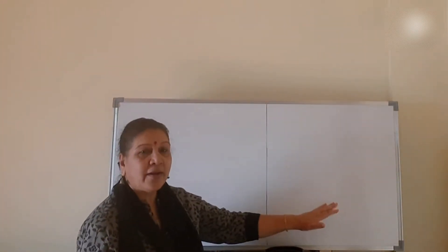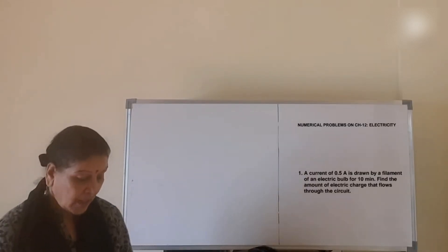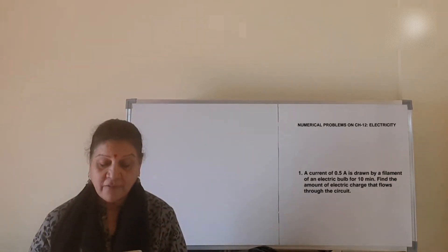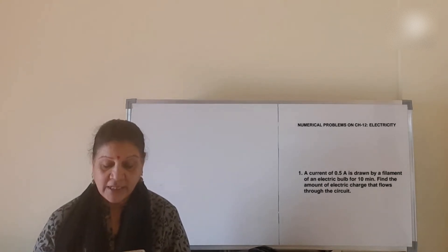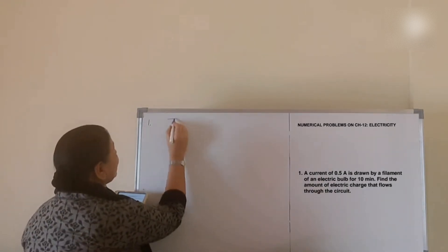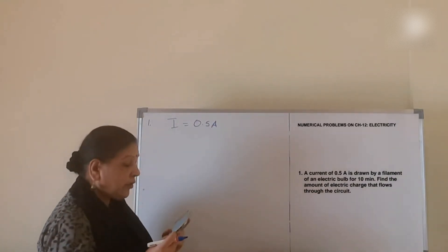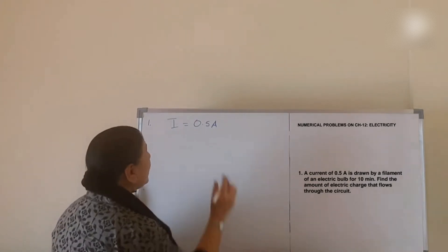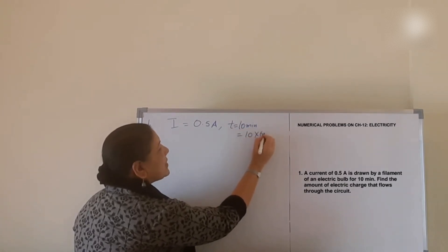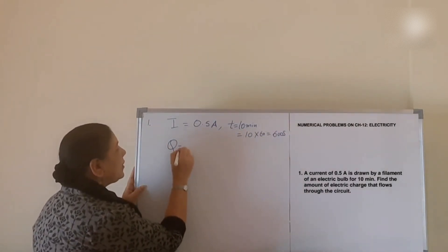On this side you will see the numericals and here on this side I'm going to solve the numerical problems. The first question is: a current of 0.5A is drawn by a filament of an electric bulb for 10 minutes. Find the amount of electric charge that flows through the circuit. So what is given to us? Current I is given as 0.5A and time is given as 10 minutes, which is 10 × 60 = 600 seconds. So you have to find Q.